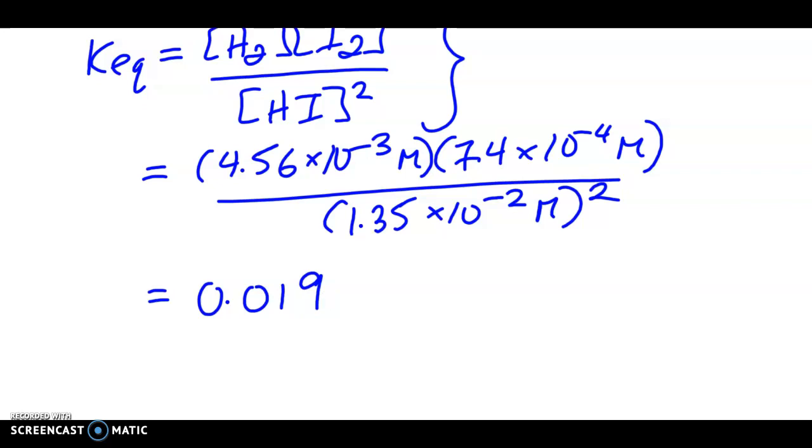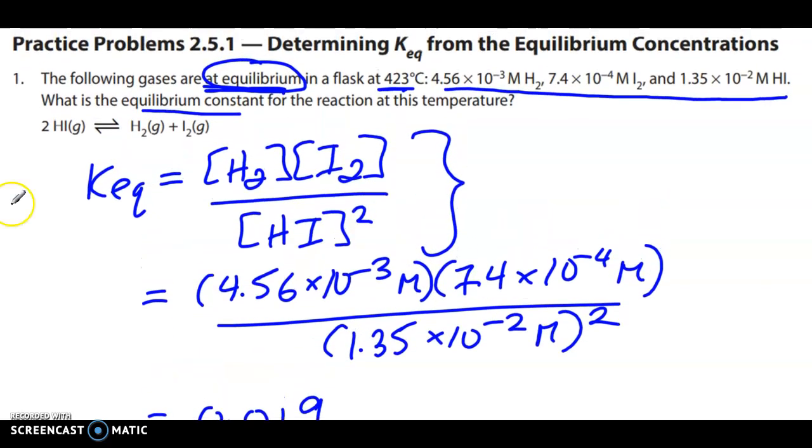For significant digits, you go by the values given. To remind you, given temperature is not seen as a value to judge this by. It's the numbers that you're actually using in this question, so it would be the 4.56, 7.4, and 1.35. This is two significant digits, so your final answer should be to two significant digits.